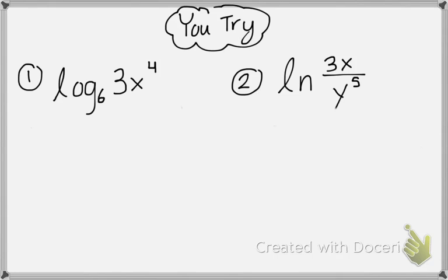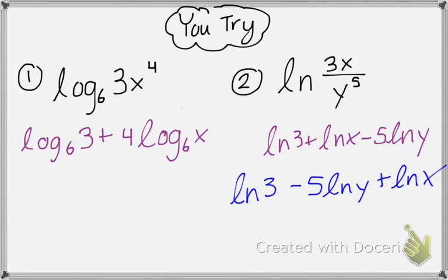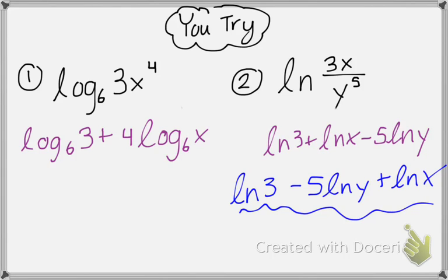Go ahead and pause the video and see if you can expand these two logarithms completely. For number one, we used the product property and then the power property to move the exponent into the coefficient. For number two, we expand it into three different logarithms, using the power property to get a coefficient of 5. Notice I wrote it in a different order to show that the order of the logarithms does not matter, as long as the signs are correct.